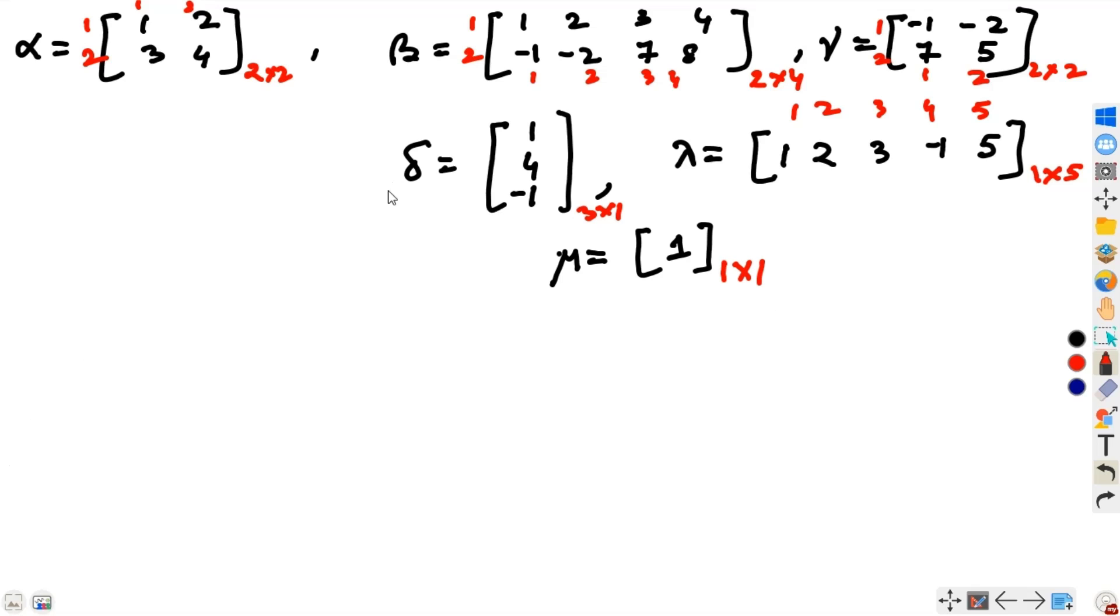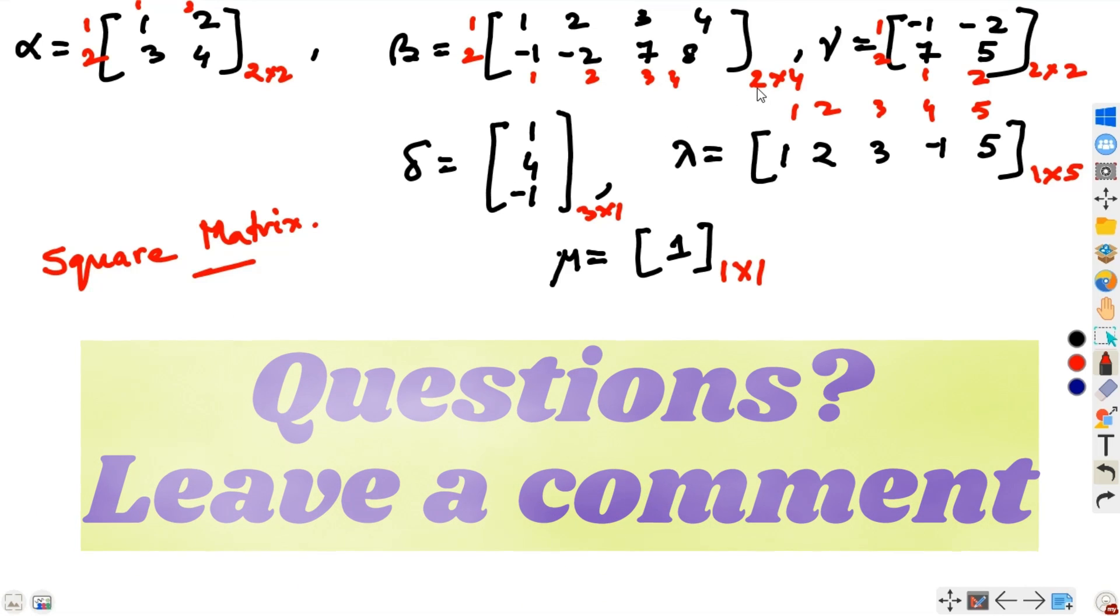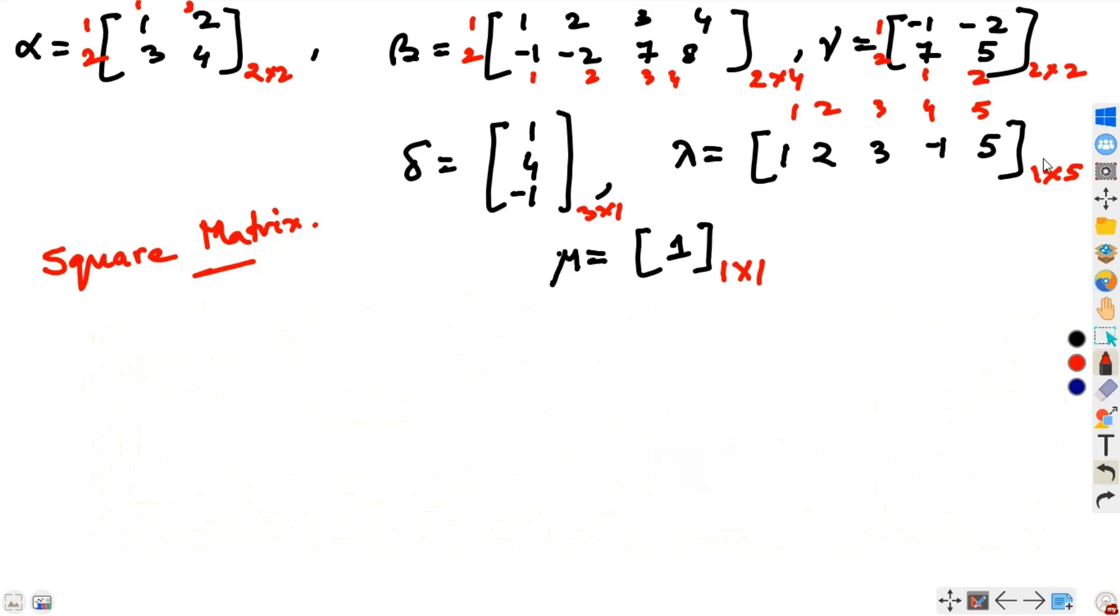Now, observe the differences between all of these matrices. A matrix can be of various sizes. But can you find any similarities between matrix alpha, the matrix gamma and the matrix mu? Notice that they have same number of rows and same number of columns. It has two rows and two columns. Same row, same column. It also has two rows and two columns. Maybe their sizes are different, but number of rows and number of columns are equal. This type of matrices has a special name and they are called square matrices. On the other hand, the matrices that don't have equal number of rows and columns, like beta or delta, this type of matrices are named as rectangular matrices.